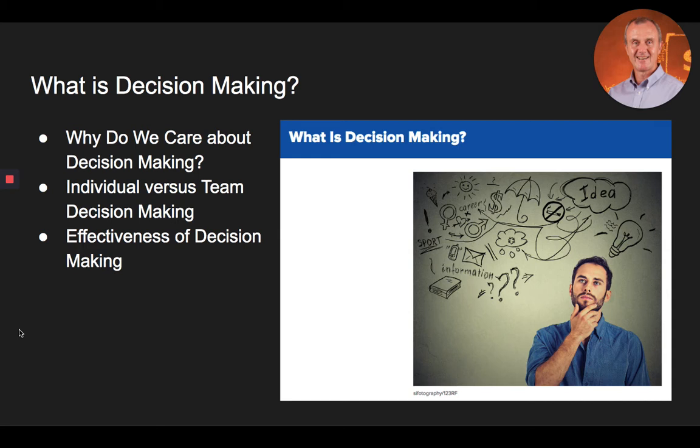So why do we care about decision making? Decision making is a major area of interest for those who study management. Not only does the job of a manager hinge on making effective decisions each and every day, but managers are also responsible for others who make decisions. Moreover, regardless of whether decisions need to be made in the normal course of performing work or in dealing with unusual occurrences, the consequences of poor decisions can have major negative impacts on the organization, its customers, employees, and the decision makers themselves.